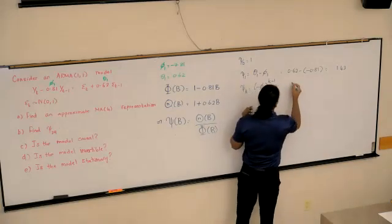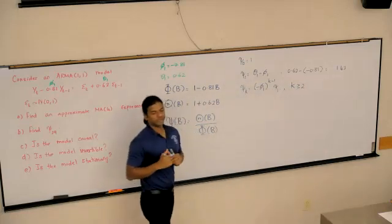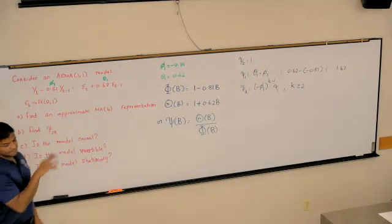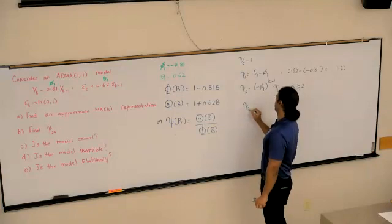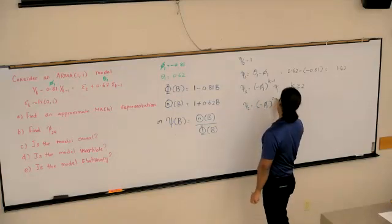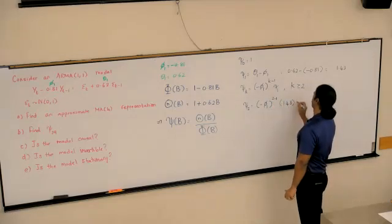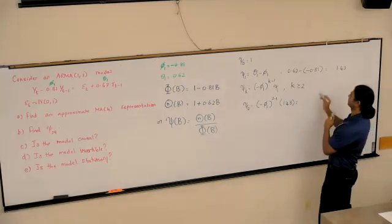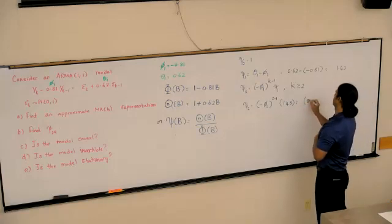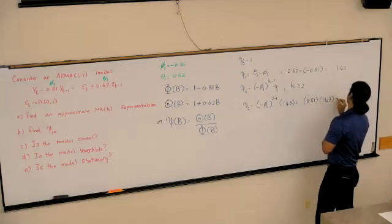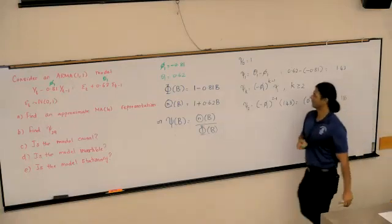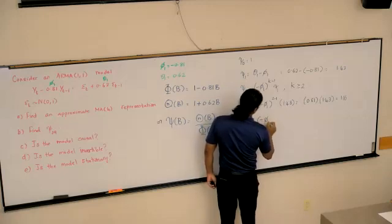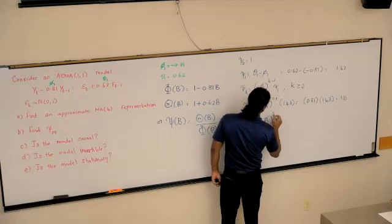The recursive equation works for k greater than or equal to 2. Psi2 would be negative phi1 raised to 2 minus 1 multiplied by 1.43, which is negative of negative phi1, 0.81 multiplied by 1.43. And what do we get? 1.16. Psi3 would be negative phi1 raised to 3 minus 1, which would be 2.